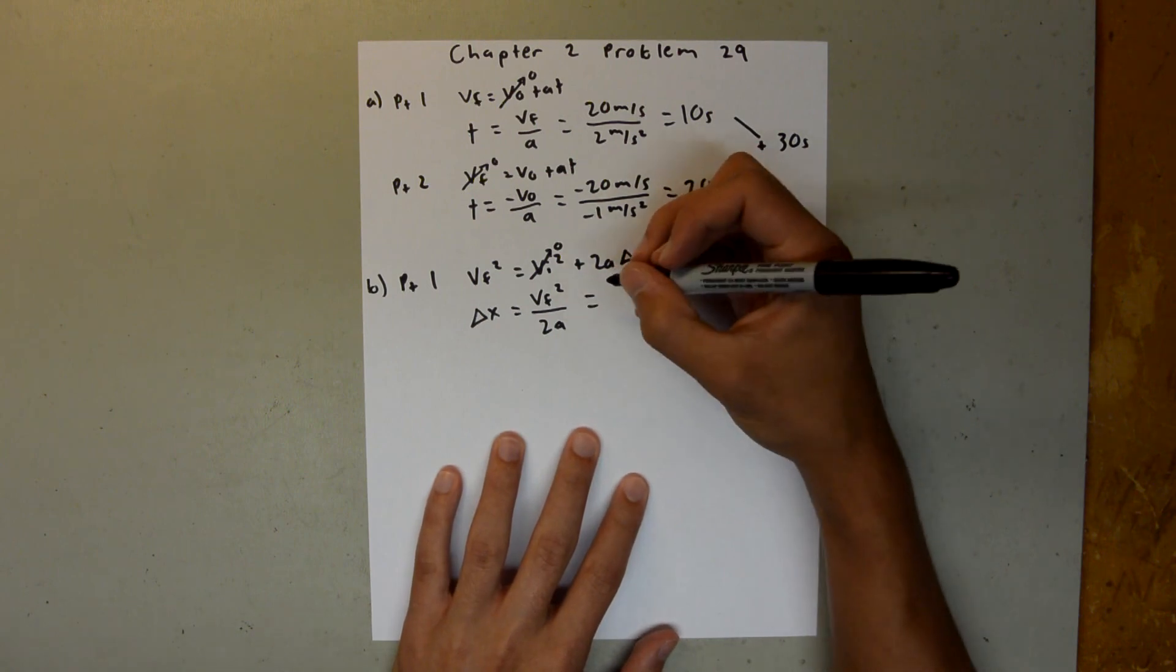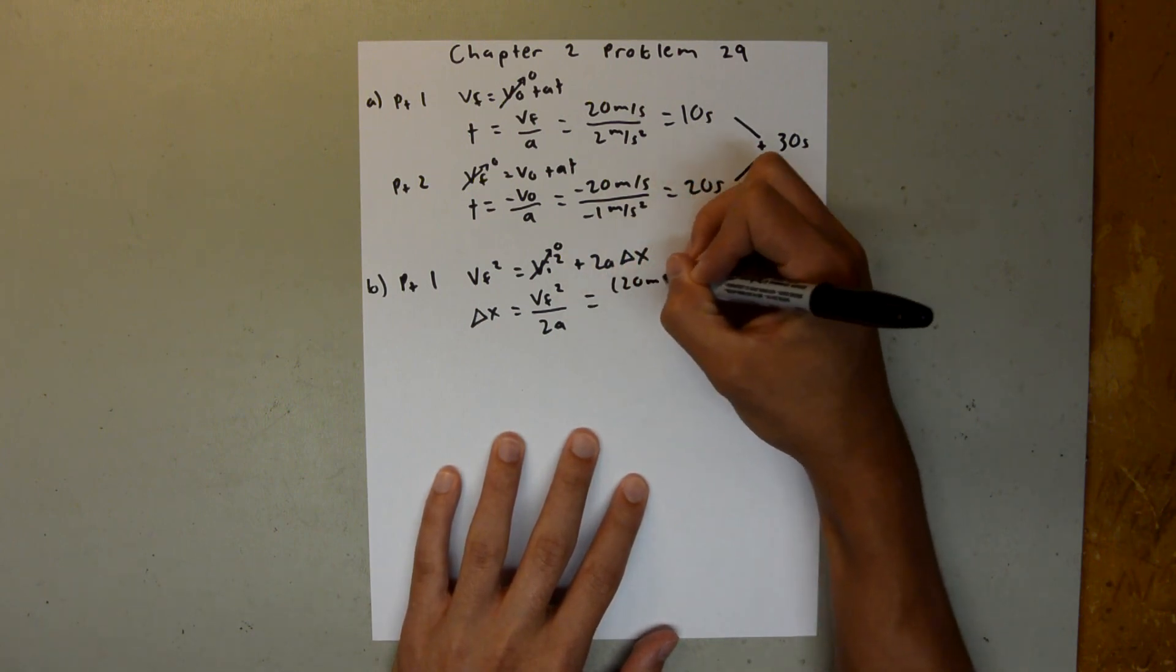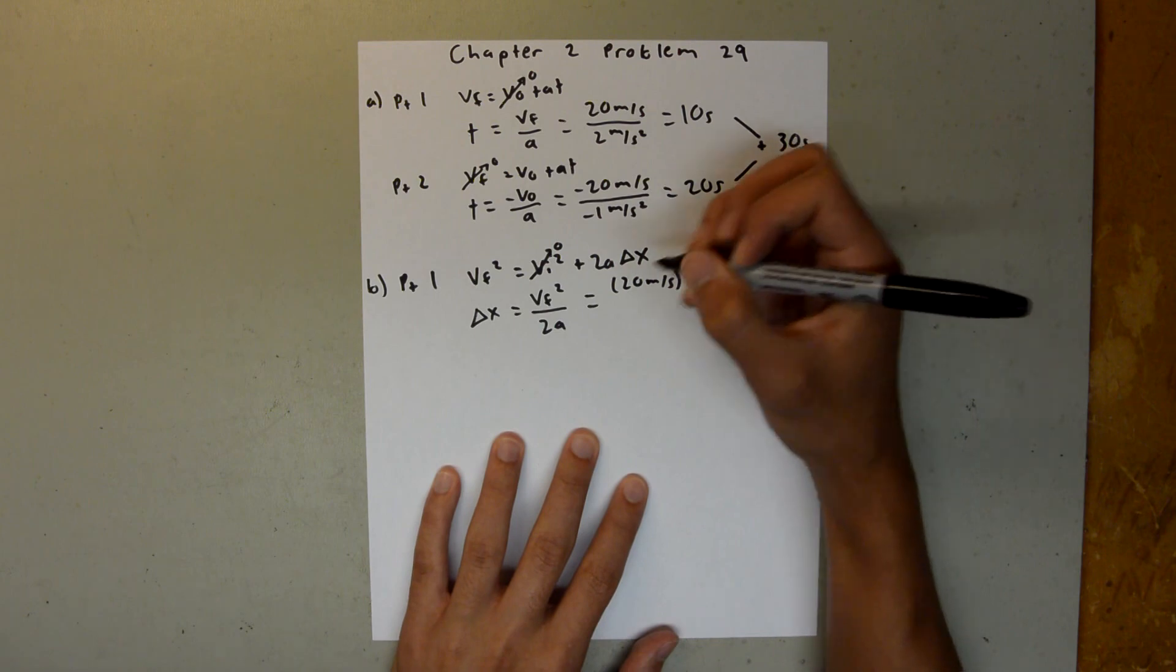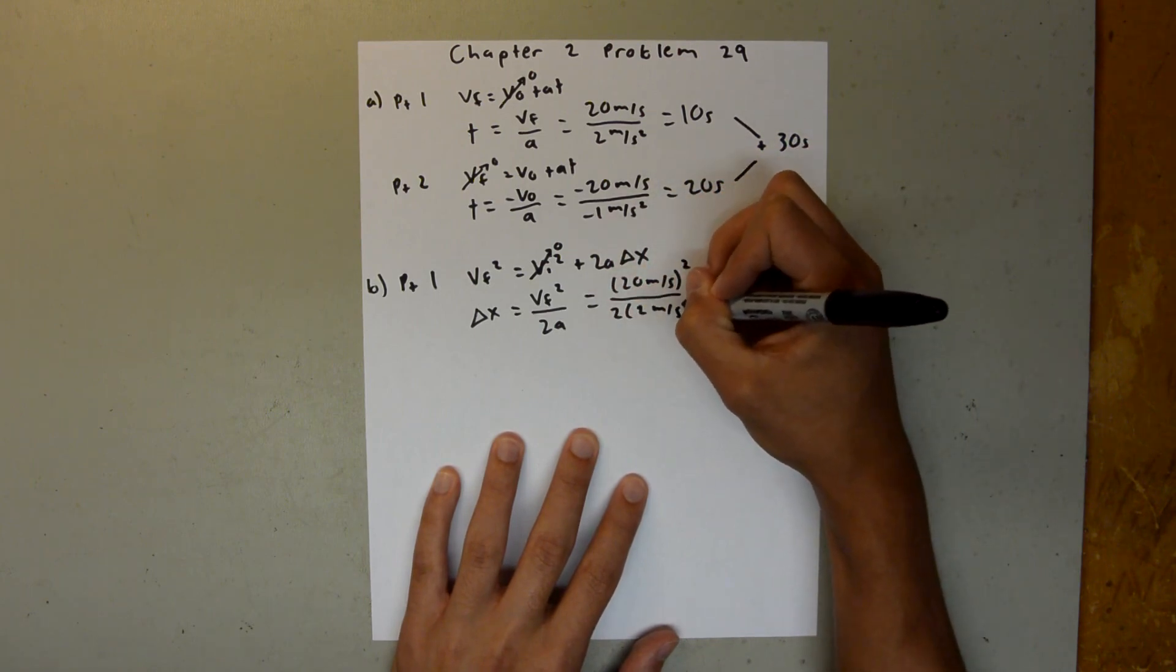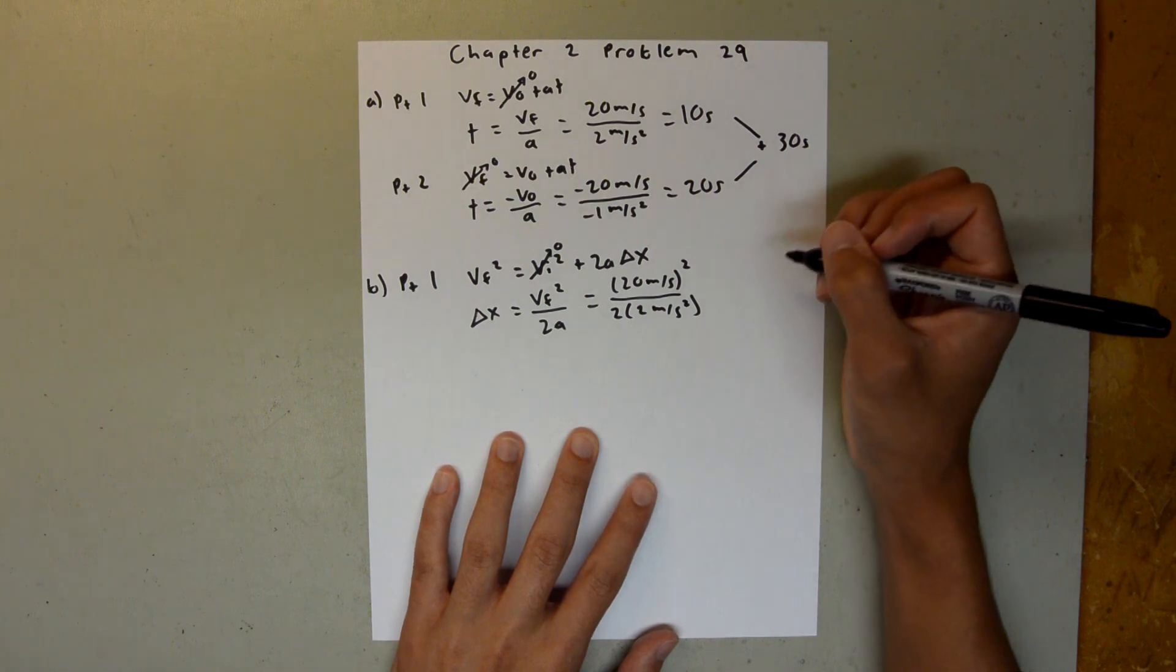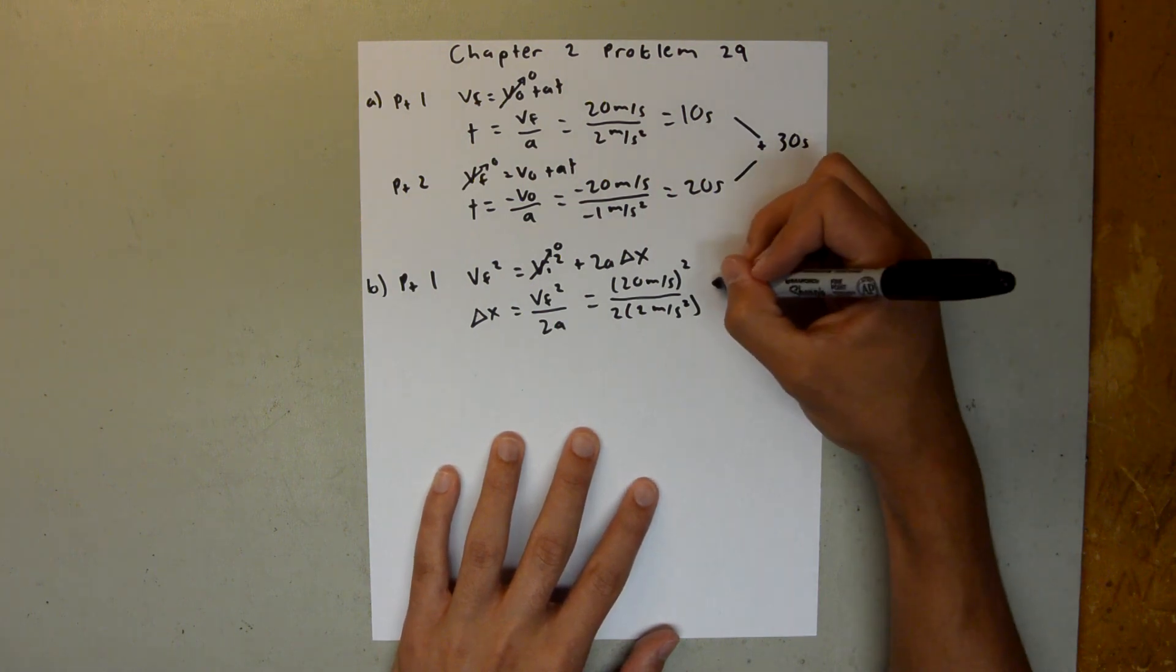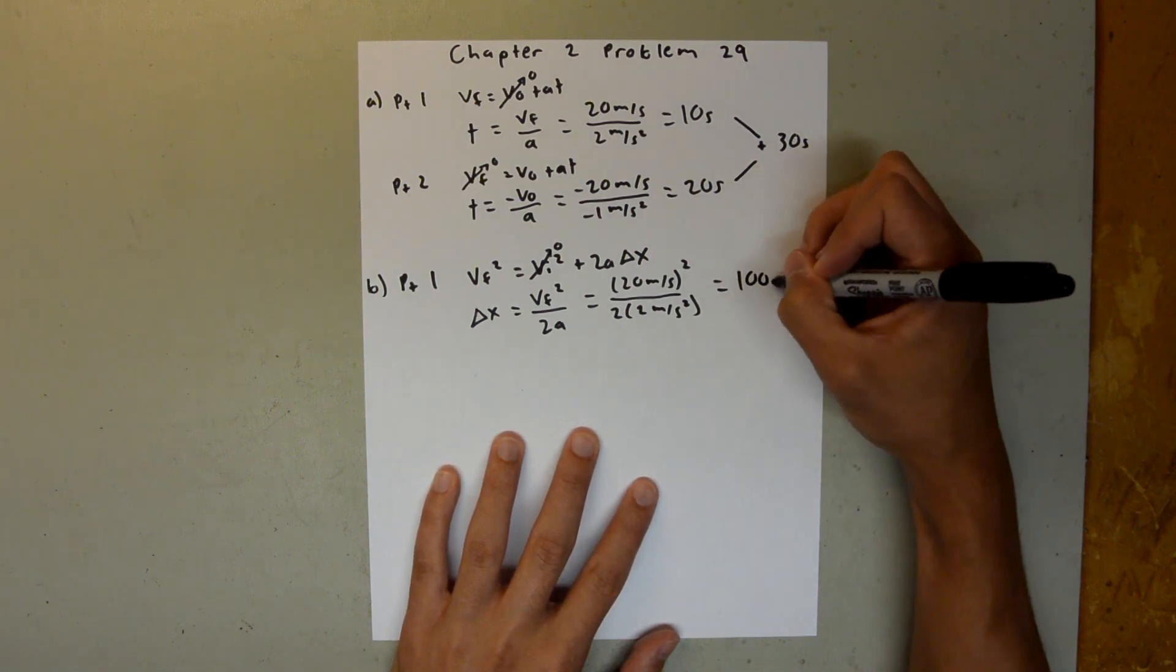We can plug in those values and say 20 meters per second squared over 2 times 2 meters per second squared, and when you plug that into your calculator, you should get 100 meters.